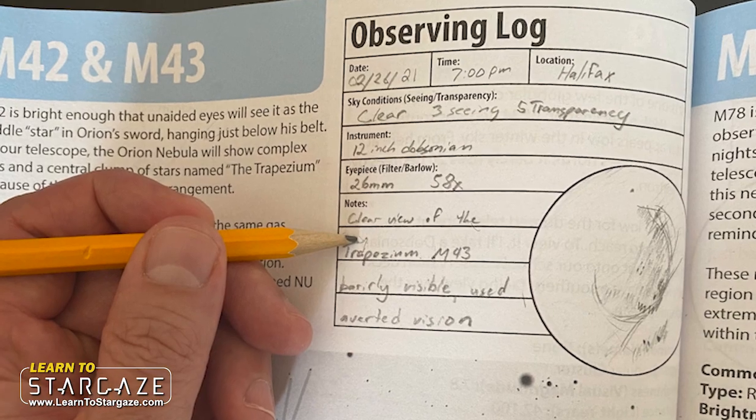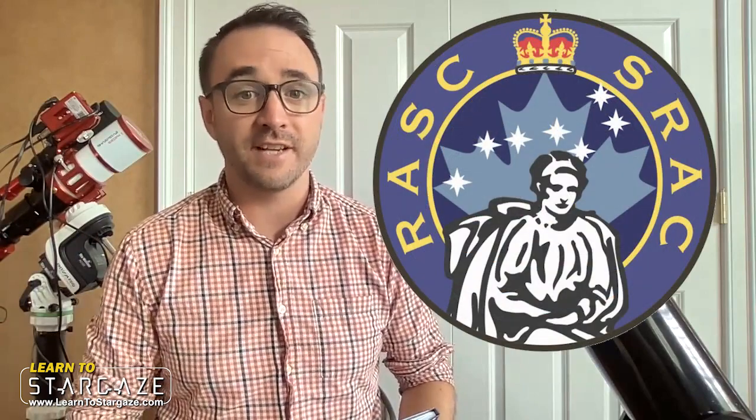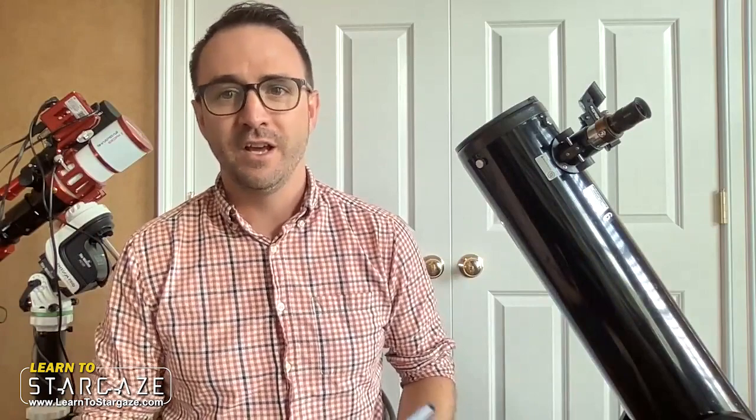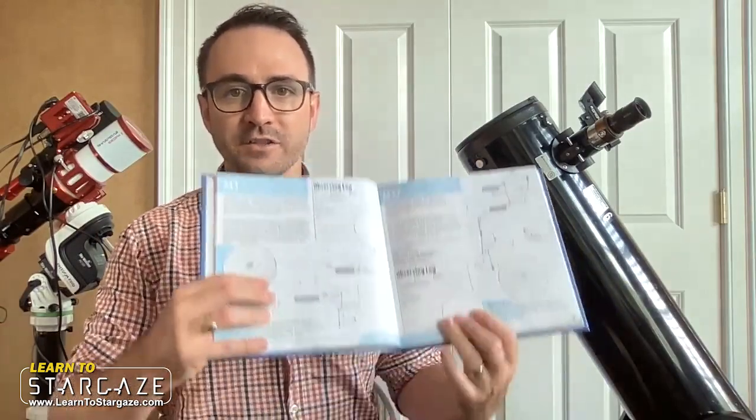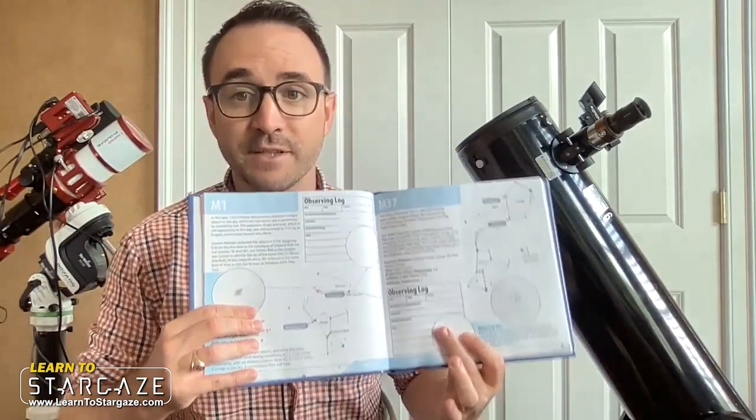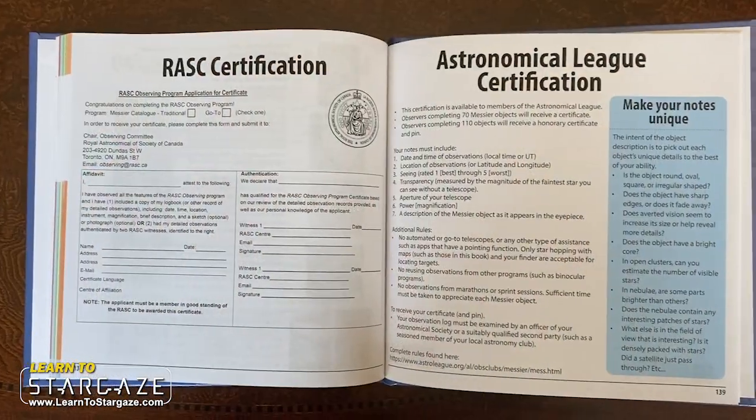If you observe all these objects and document your observations, there are several organizations like the Astronomical League in the USA and the Royal Astronomical Society of Canada that will award you a certificate for this accomplishment. Not only will this book help you find each target, but it also gives you a place to document your observations and apply for your Messier certificate. I've even included application forms and instructions in the appendix.